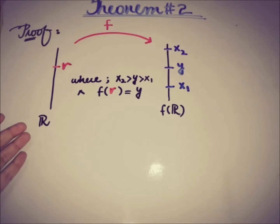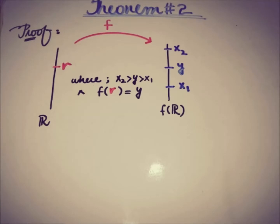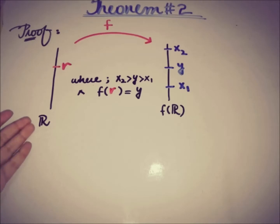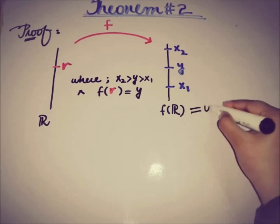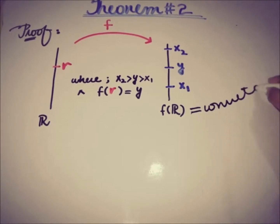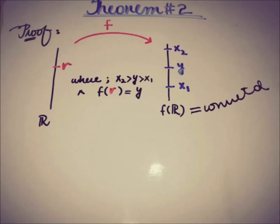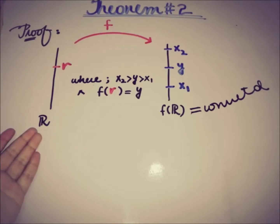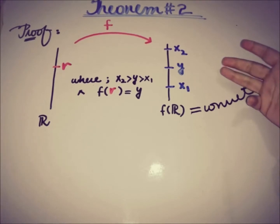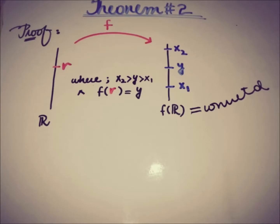Since ℝ is a connected space, and we have seen that the continuous image of a connected space is also connected, f(ℝ) is also a connected space. We now use proof by contradiction, assuming there is no element in ℝ whose image is y.